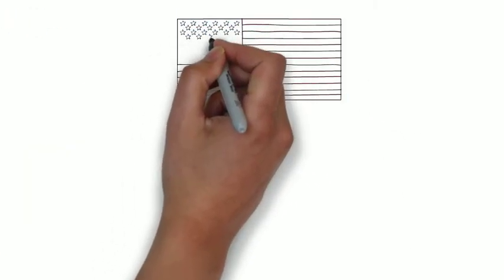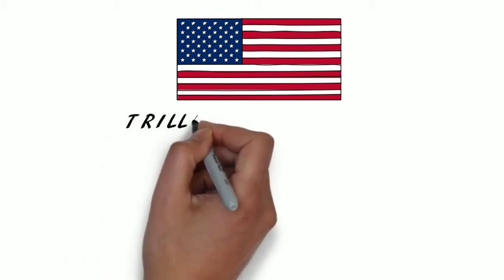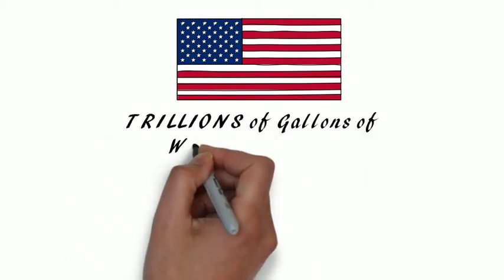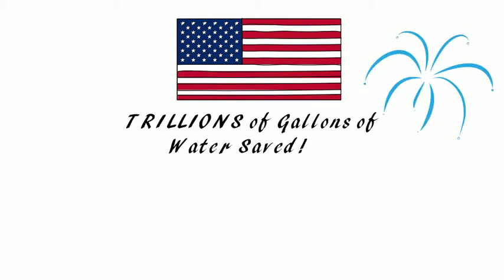This is enough recyclable water to irrigate an average American lawn twice a week. Recycling gray water from these two sources alone has the potential to save the United States trillions of gallons of water per year.